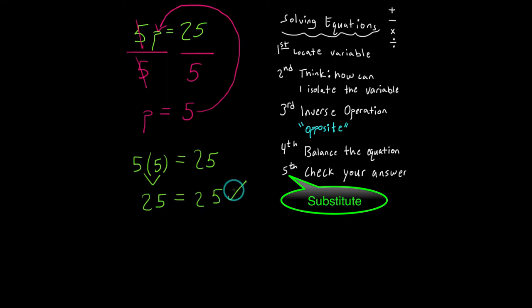I'm going to put a check mark down. And I can rewrite the solution to the equation below, which is p is equal to five. Now I'm just going to box that answer up.